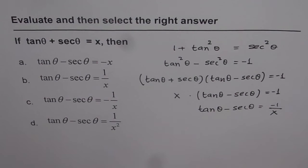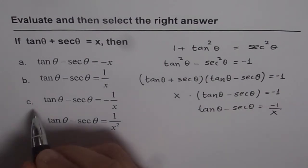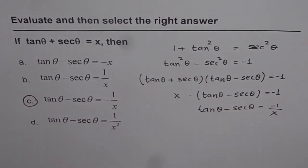Do you see that? So that is how we can find the result. We have tan theta minus secant theta equals to minus of 1 over x, which is option c. I hope you find it interesting. Thank you.